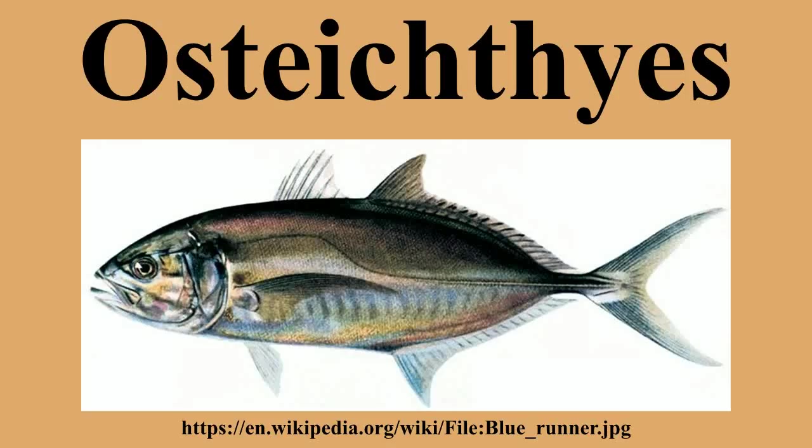Early bony fish had simple lungs which helped them breathe in low-oxygen water. In many bony fish these have evolved into swim bladders, which help the body create a neutral balance between sinking and floating. They do not have fin spines, but instead support the fin with lepidotrichia. They also have an operculum, which helps them breathe without having to swim.